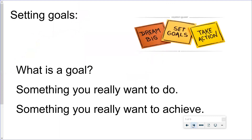So before we think about how we can set a realistic goal, let's refresh our memories. Let's think: what is a goal? As we said, a goal is something you really want to do. It's something you really want to achieve, something you really want to accomplish. It's something you really want to learn how to do. You might not be able to do it yet, but if you keep practicing, you will be able to do it. So that is a goal — it's a realistic goal.